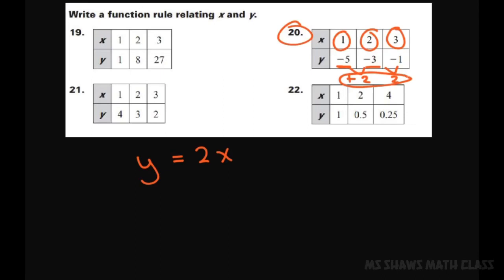So I'm going to plug in my X here. So I have Y equals 2 times, negative times 1, and that gives me 2 and I need a negative 5. So I might want to do minus 7 and let's check that out.